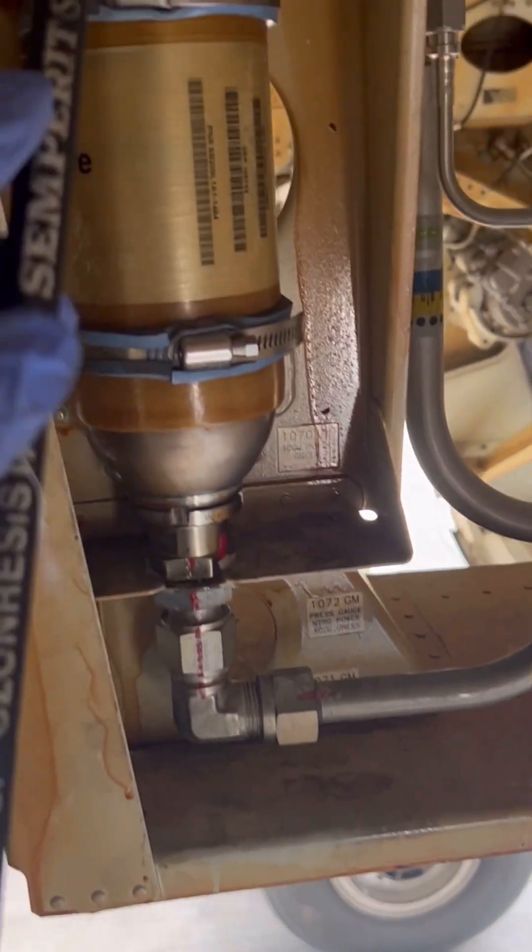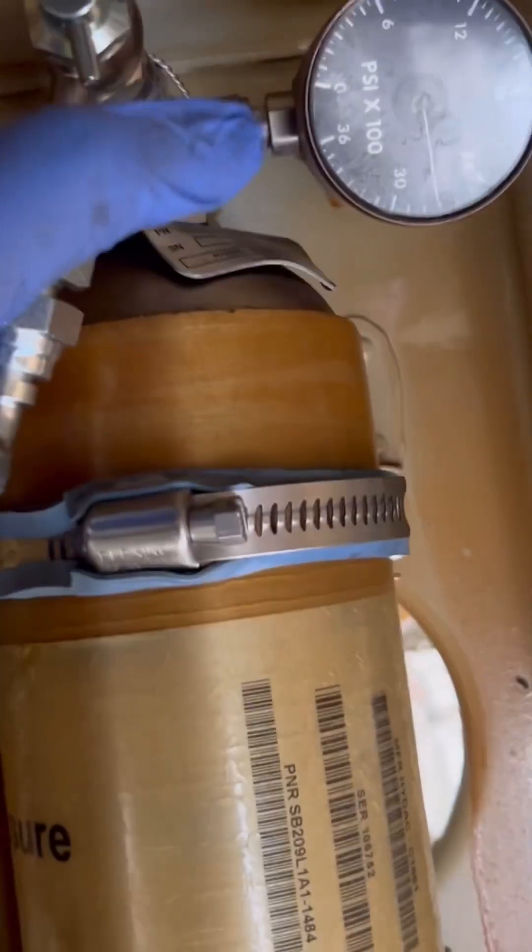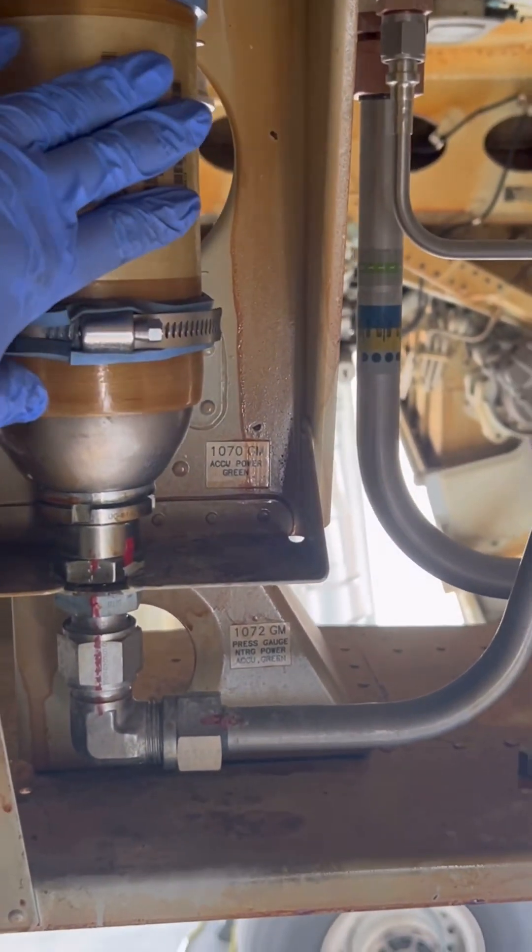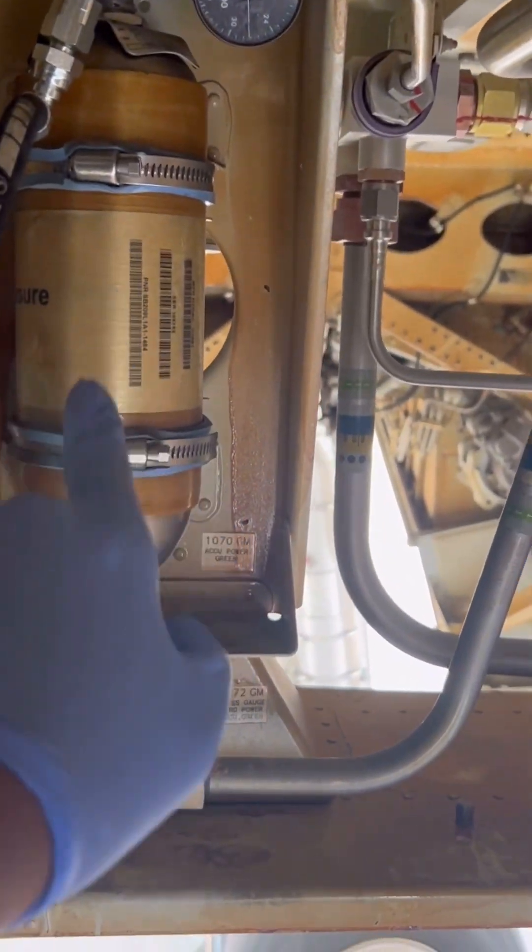Welcome to ITS Aircraft Engineering. Today we're inside an Airbus A320 wheel well. We have a defective green power system accumulator. As you can see, that's the part number. This is our green system power accumulator.